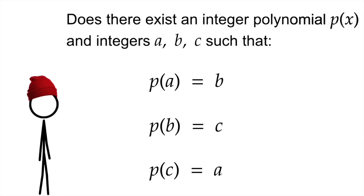So here's the problem. Does there exist an integer polynomial, let's call it p, along with three other integers, call them a, b, and c, such that p of a equals b, p of b equals c, and p of c equals a? So it's like a loop. The polynomial is looping the values around and around. A loopy polynomial. So is it possible? That is the question.